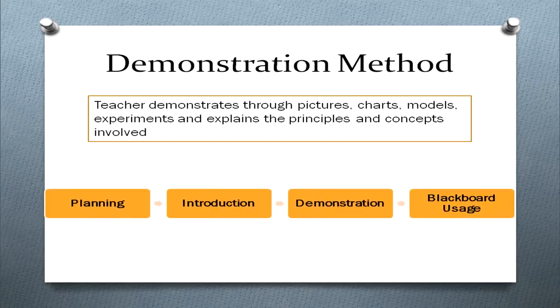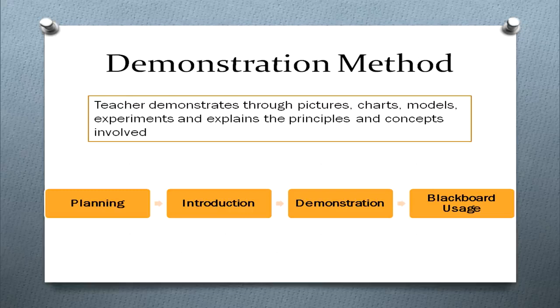Demonstration method has four steps. The first step is planning, which happens outside the classroom. As a teacher you plan what will attract the mental ability of your students, what will involve them more, and you choose the experiment and material required. If you are going to conduct an experiment, especially in science, you do it beforehand so that when you go to class you are able to do it effectively. You also prepare some questions to ask during or after the experiment so that children are able to develop their curiosity even more.